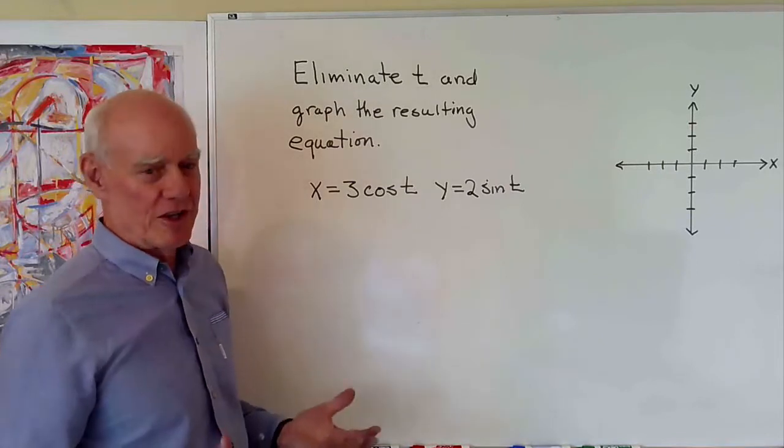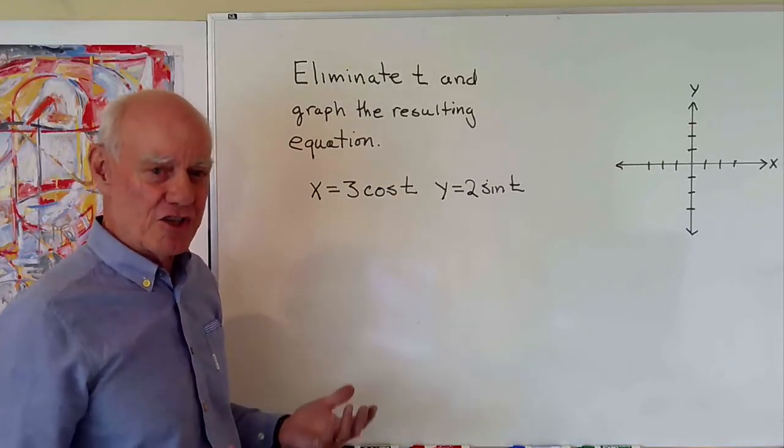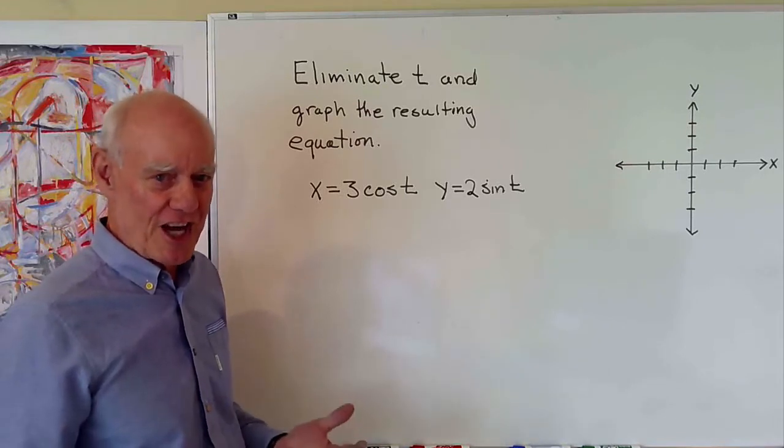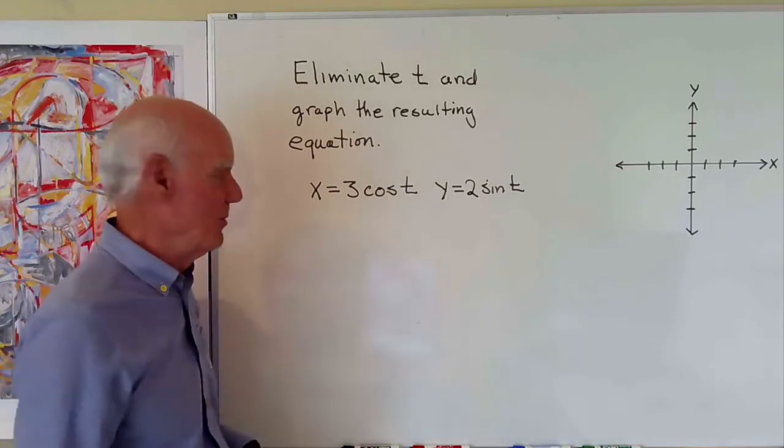So because these are trig functions, we know that sine squared plus cosine squared is equal to one. So if we can find the sine of t and the cosine of t, we can square them, add them together, and we know the result will be one.